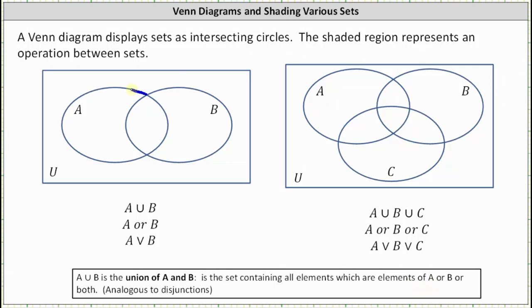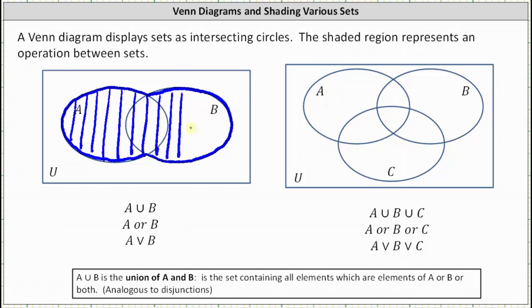So A union B would be this set here, the set containing the elements that are in A or in B or in both, which would be this set here. This is A union B.